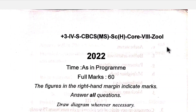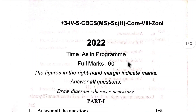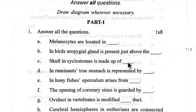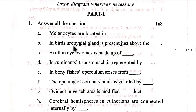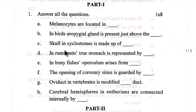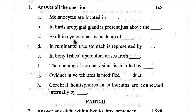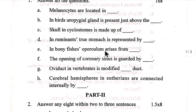Fourth semester zoology core eight, number one: melanocytes are located in [blank]. A gel gland is present just above the [blank]. Skull in cyclostomes is made of [blank].